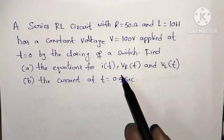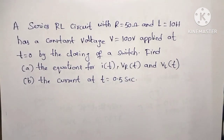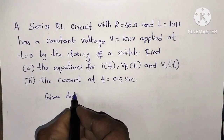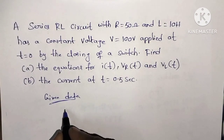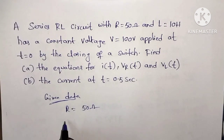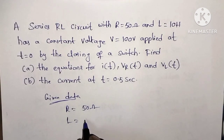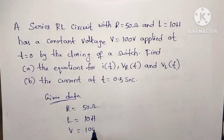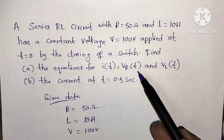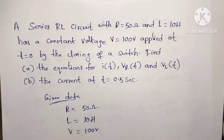We need to find equations for I of t, Vr of t, and Vl of t. First, let's write the given data. Given data: R equal to 50 ohms, inductor value L equal to 10 henrys, and voltage V equal to 100 volts. We need to find I of t, Vr of t, and Vl of t.